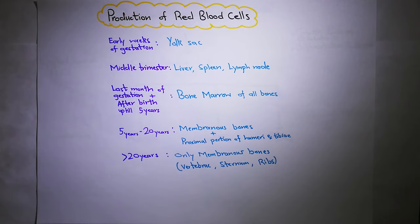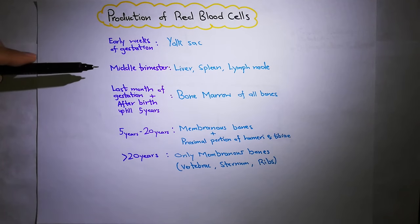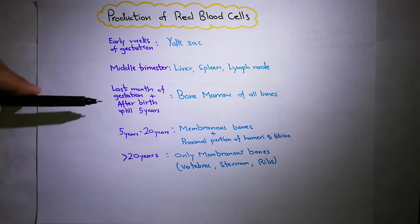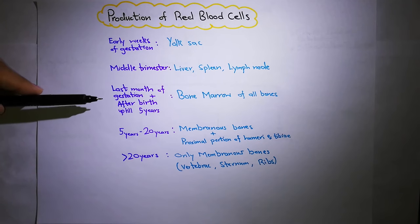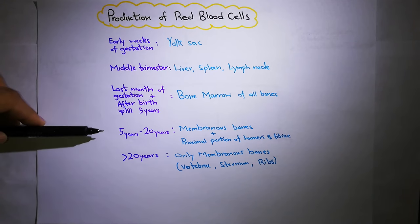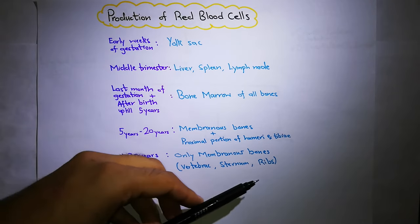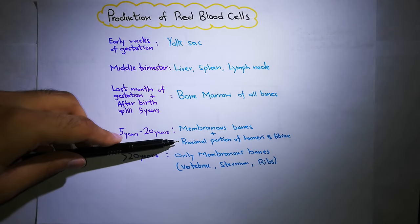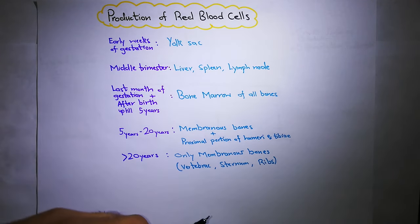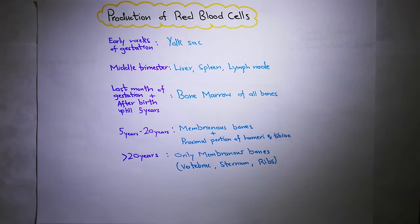To quickly revise: in the first trimester and early weeks of gestation it is the yolk sac; middle trimester is the liver, spleen and lymph nodes; end of gestation (third trimester) is bone marrow of all bones; up to 5 years is bone marrow of all bones; 5 to 20 years is membranous bones including vertebrae, sternum, ribs and proximal portions of humerus and tibia; and after 20 years only bone marrow of membranous bones makes RBCs.